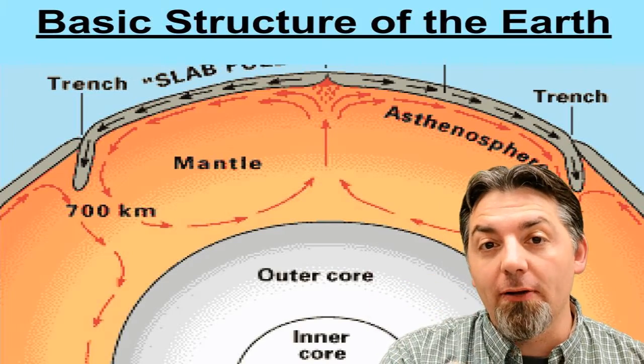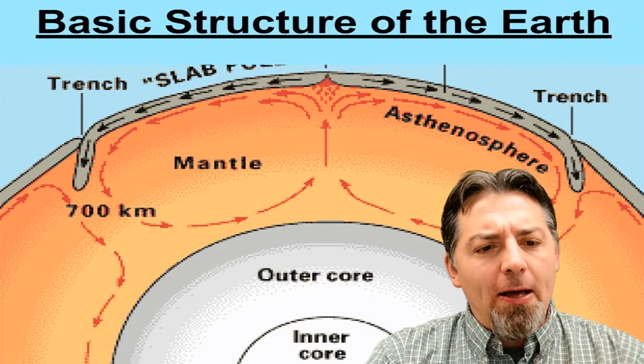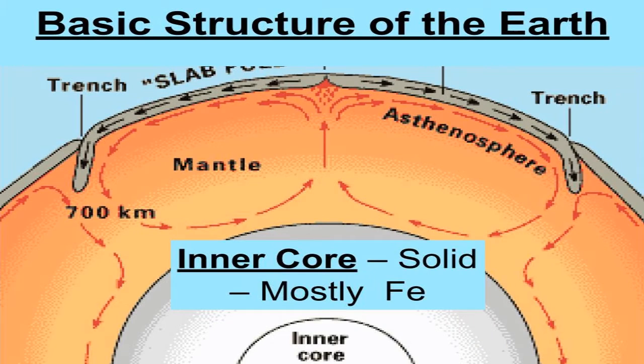So we're going to start in the very center of the Earth. We call that the inner core. Now the inner core is solid. It's thought to be solid and made up of mostly iron, kind of an iron-nickel mix.